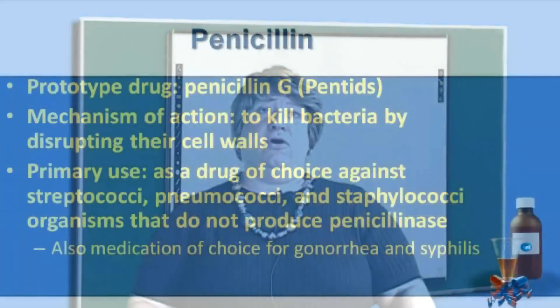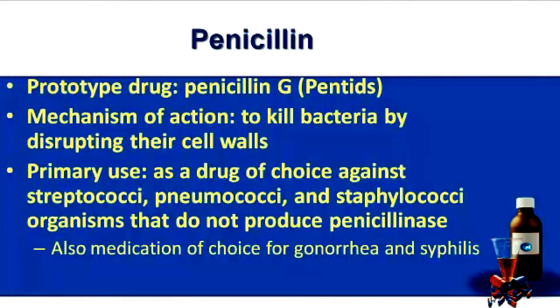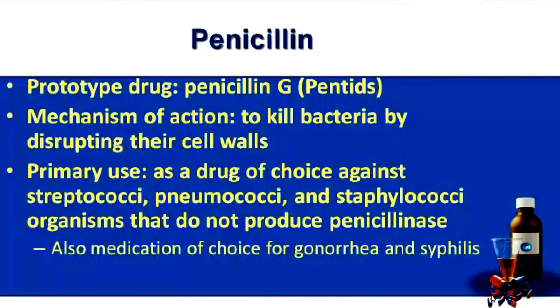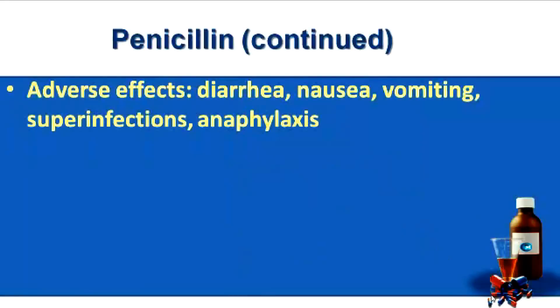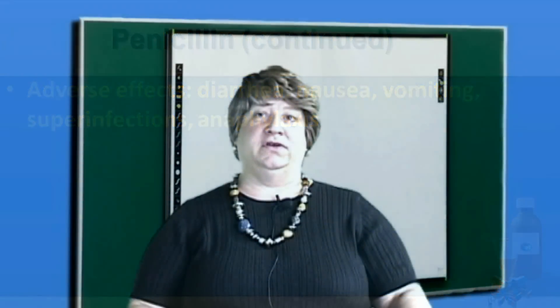With penicillin, our prototype drug is penicillin G, which is known as Pentids, and its mechanism of action is to kill bacteria by disrupting their cell walls. It's primarily a drug of choice against streptococci, pneumococci, and also staphylococci organisms that do not produce the enzyme penicillinase. It's also a medication of choice for the treatment of sexually transmitted infections of gonorrhea and also syphilis.